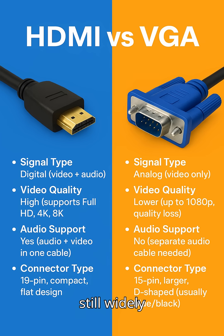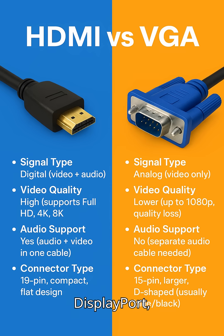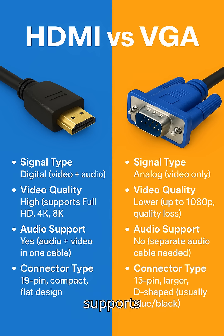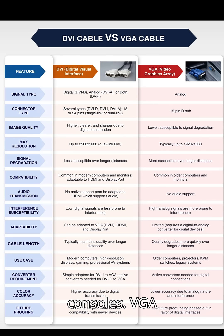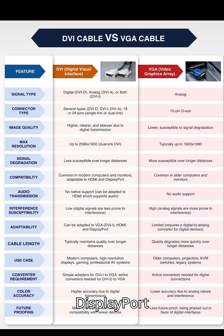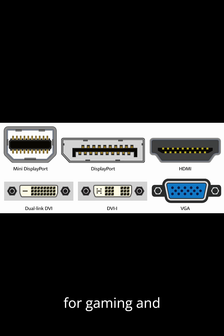Future outlook. HDMI is still widely used and continuously updated. VGA is outdated and being phased out. Display Port is preferred for PCs and gaming monitors because it supports higher refresh rates and daisy chaining. In short: HDMI equals digital video plus audio, best for TVs, movies, and consoles. VGA equals analog, video only, outdated technology. Display Port equals digital, advanced, best for gaming and professional monitors.